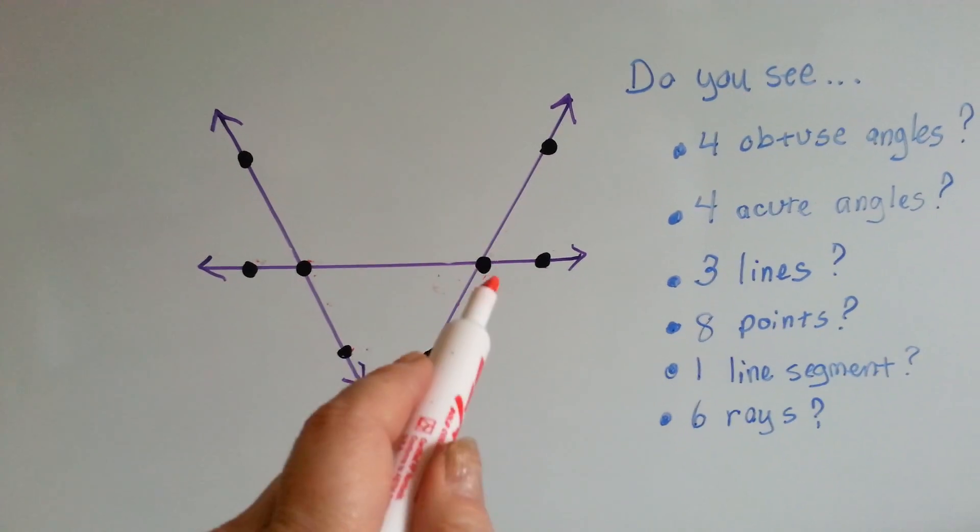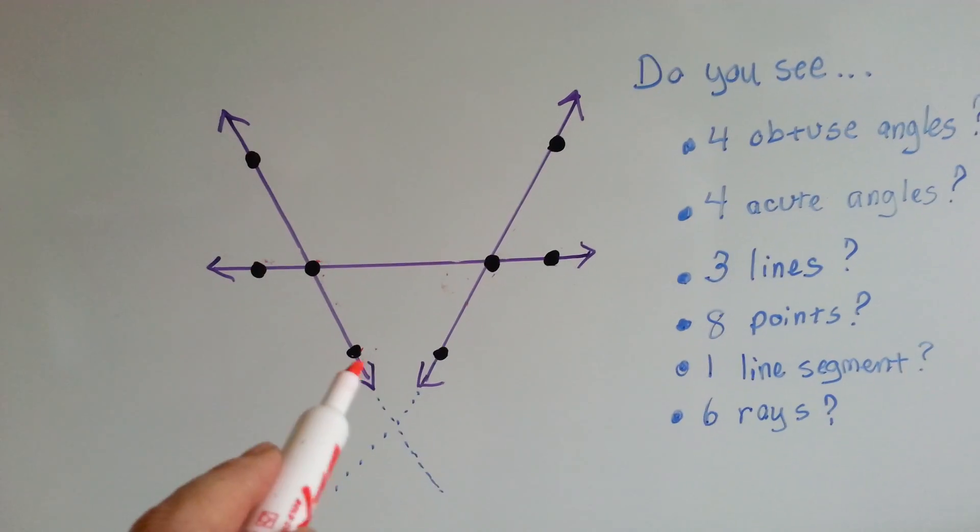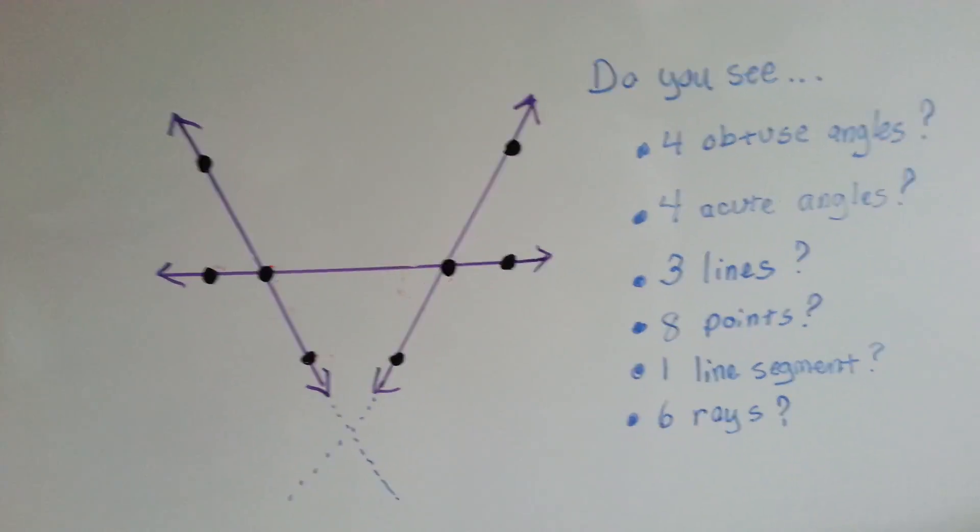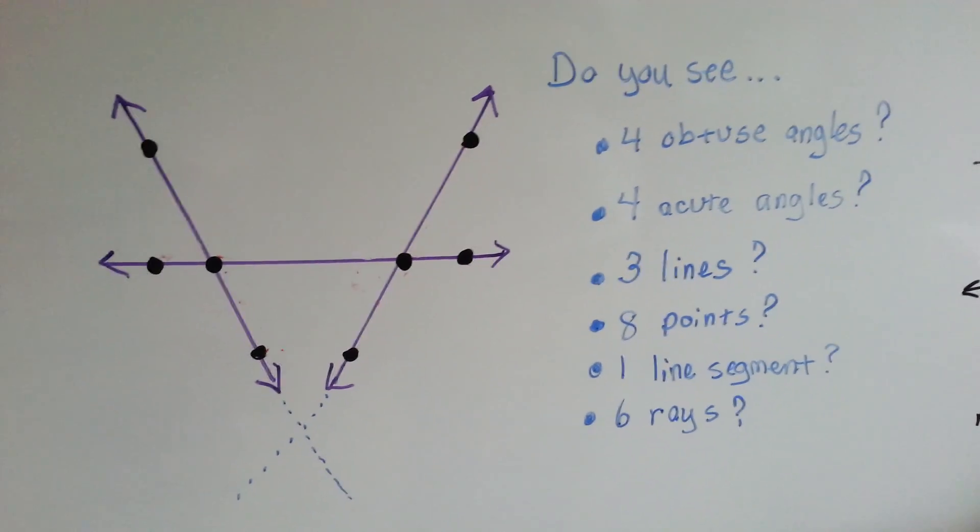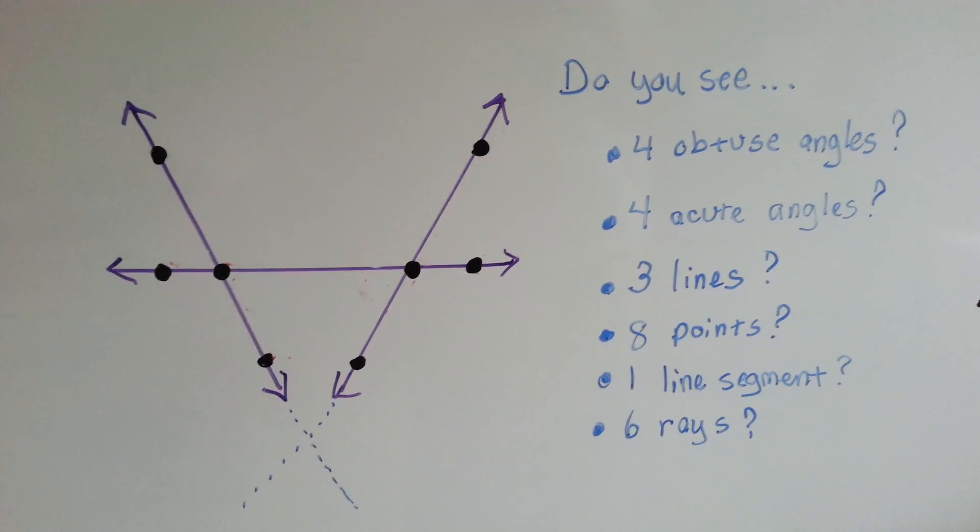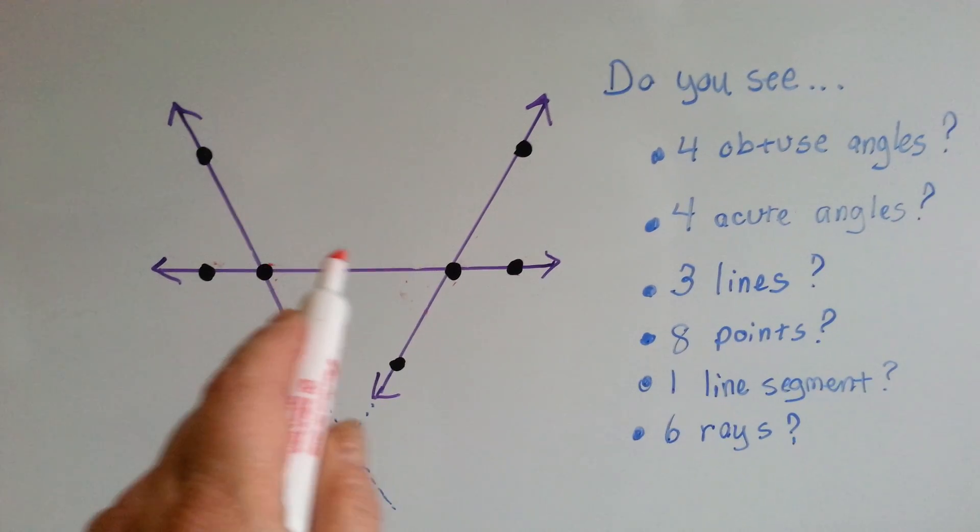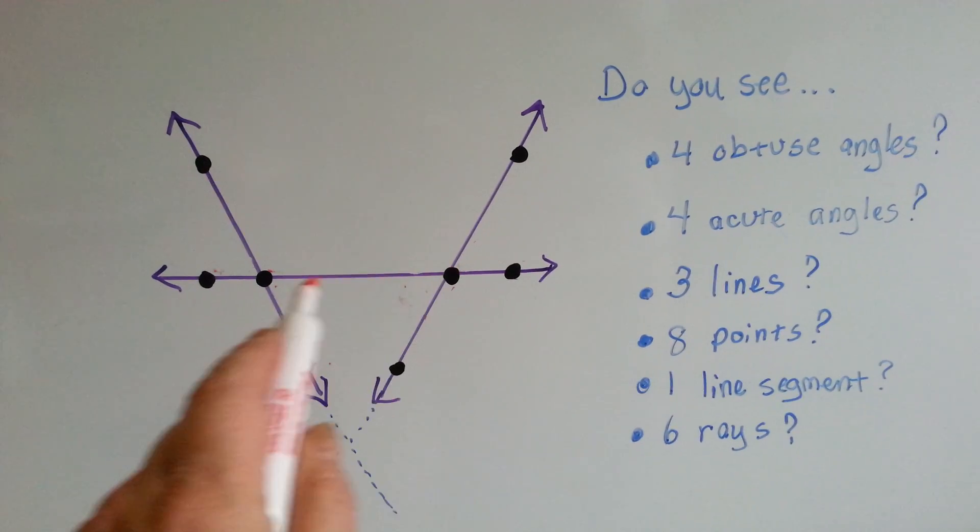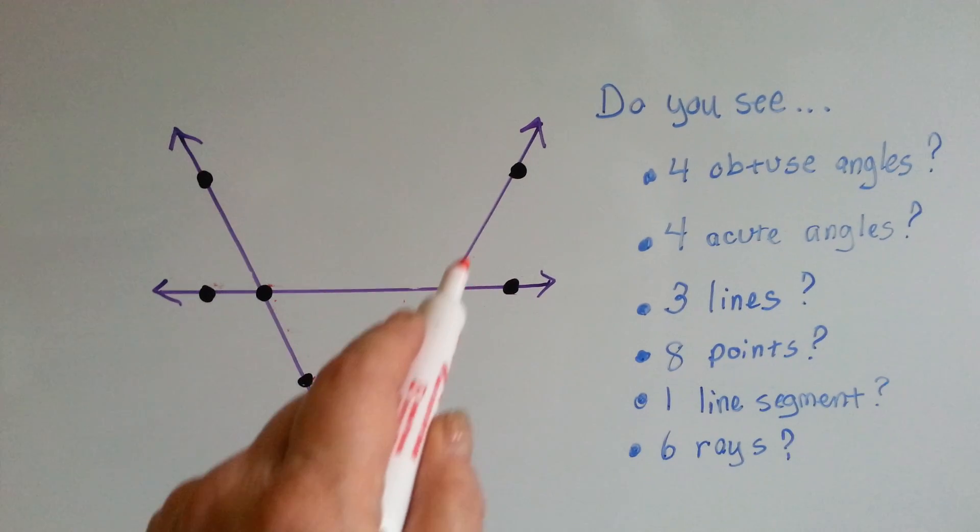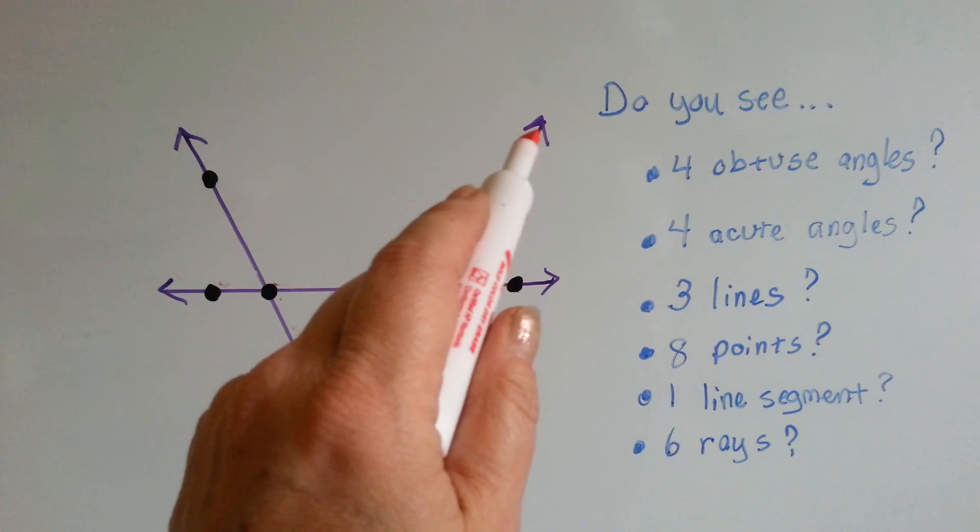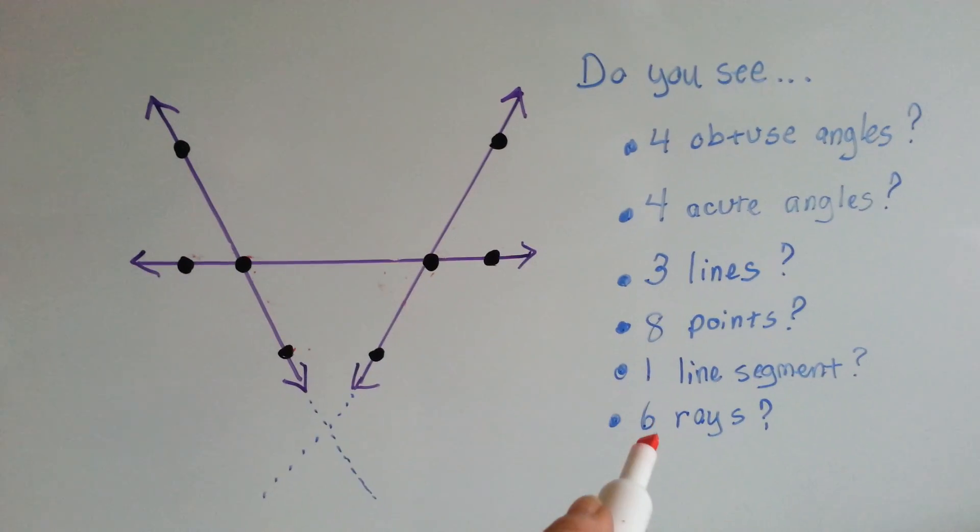We've got one, two, three, four, five, six, seven, eight points. Do you see one line segment? Remember a line segment has two ends to it? No arrow tips. It's got two ends to it. Right here and right here. That's the line segment. See, from here to here is not a line segment because it ends with an arrow tip. See? That is a ray.